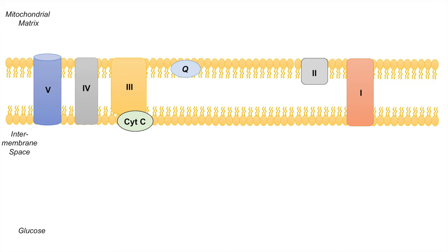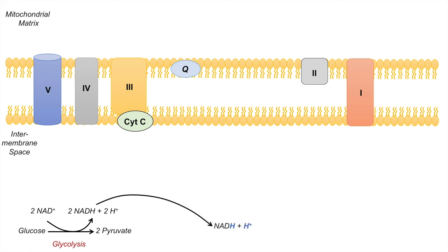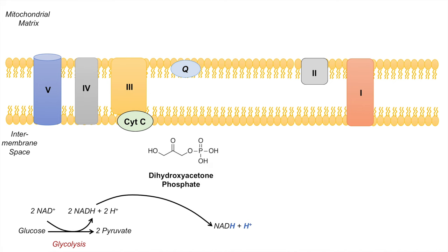Here's the mitochondrial inner membrane with the complexes of the electron transport chain. If we have glucose in the cytosol, we can process that glucose by glycolysis to produce 2 pyruvate. In the process of glycolysis, we take 2 NAD+ and reduce it to 2 NADH, also getting 2 hydrogen ions or 2 protons. In order for the cell to generate ATP from this NADH, it has to smuggle protons into the electron transport chain. The cell takes a proton from the NADH and another proton and adds them to dihydroxyacetone phosphate.